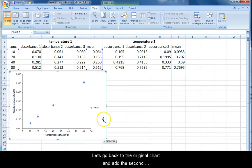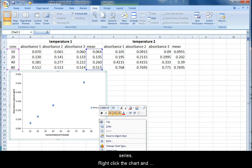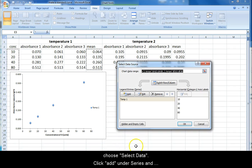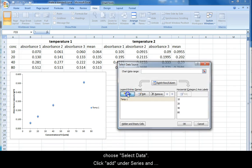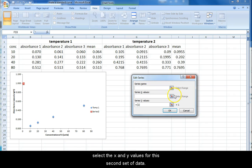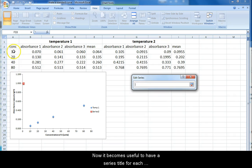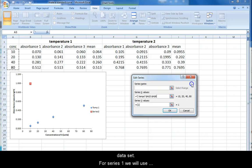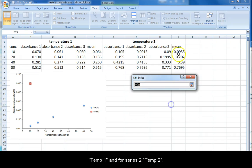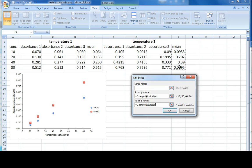Right-click the chart and choose select data. Click add under series and select the X and Y values for the second set of data. Now it becomes useful to have a series title for each data set. For series one I will use temp one, and for series two temp two.